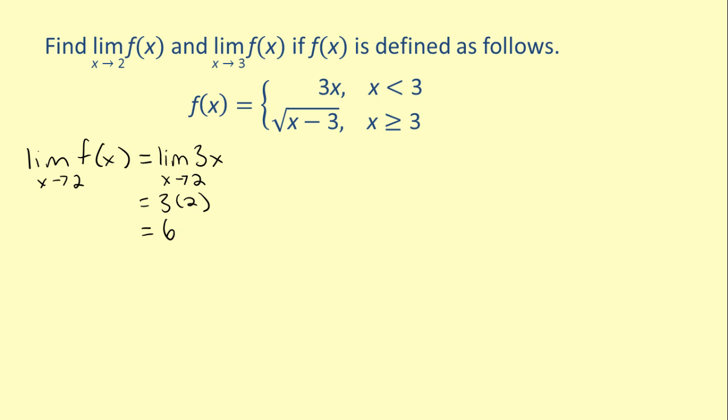which is equal to 6. Therefore, the limit of f(x) as x approaches 2 is 6. Now let's find the limit of f(x) as x approaches 3. Since 3 is the boundary point, we need to find the left and right-hand limits. We'll first find the left-hand limit. If x is approaching 3 from the left, then x is less than 3. So the limit of f(x) as x approaches 3 from the left is equal to the limit of 3x as x approaches 3 from the left.